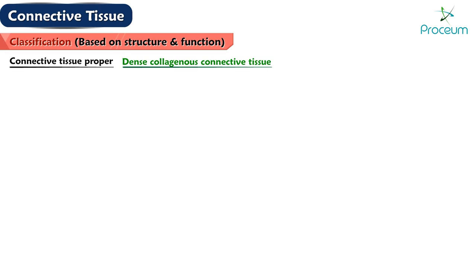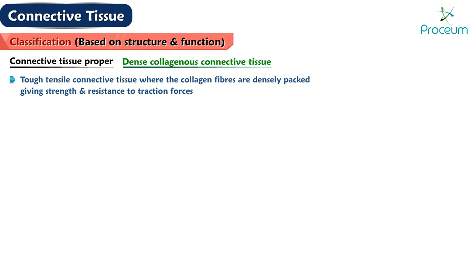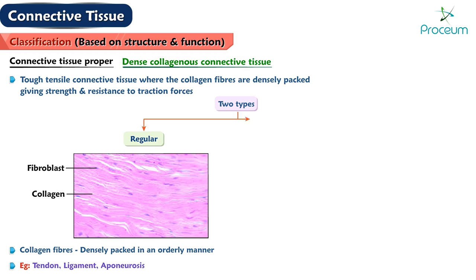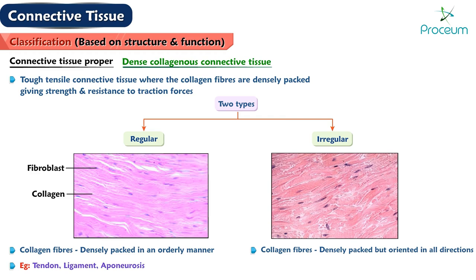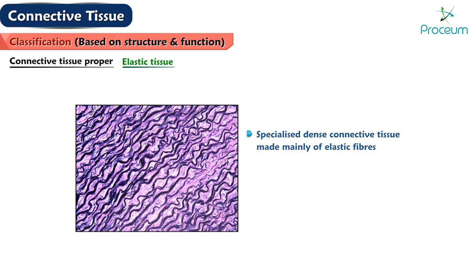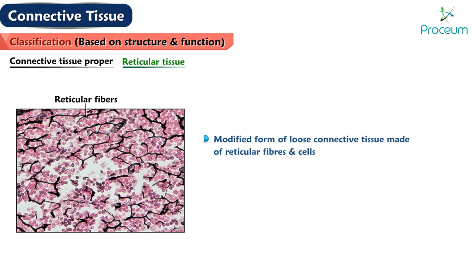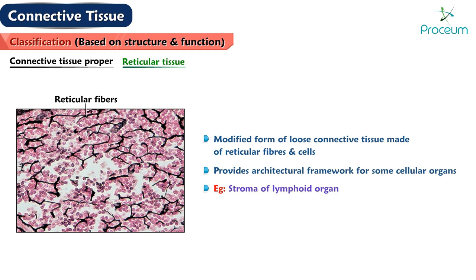Dense collagenous connective tissue is a tough, tensile connective tissue where the collagen fibers are densely packed, giving strength and resistance to traction forces. It is of two types: Regular, where the collagen fibers are densely packed in an orderly manner — for example, tendon, ligament, aponeurosis; and Irregular, where the collagen fibers are densely packed but oriented in all directions — for example, dermis of skin. Elastic tissue is a specialized dense connective tissue made mainly of elastic fibers, found where elasticity is required — for example, ligamentum nuchae. Reticular tissue is a modified form of loose connective tissue made of reticular fibers and cells, providing the architectural framework for some cellular organs — for example, stroma of lymphoid organ.